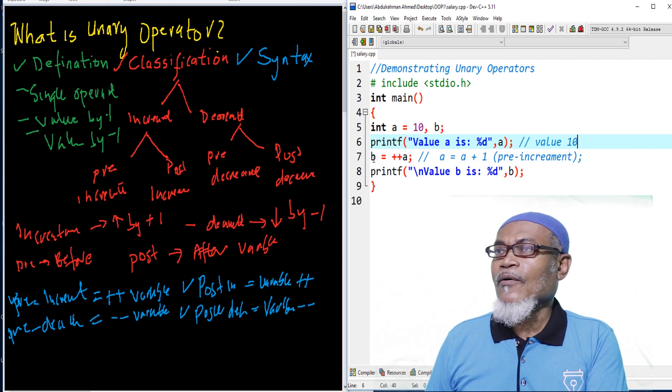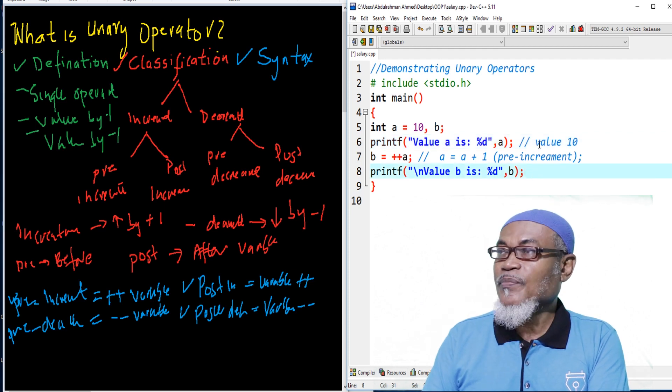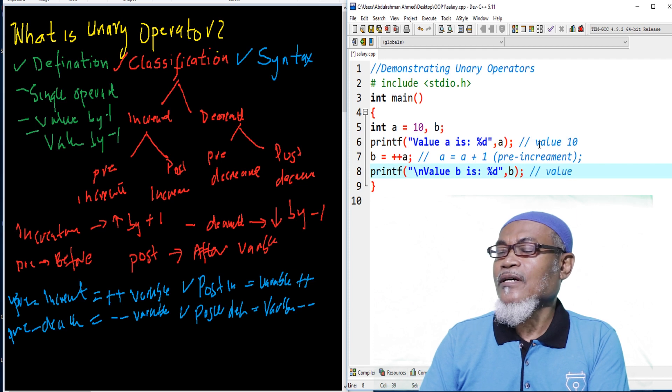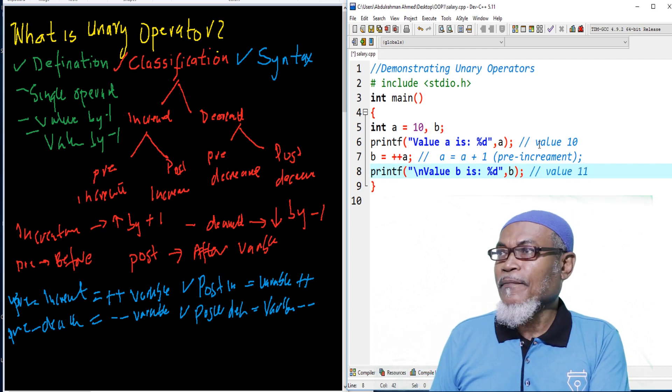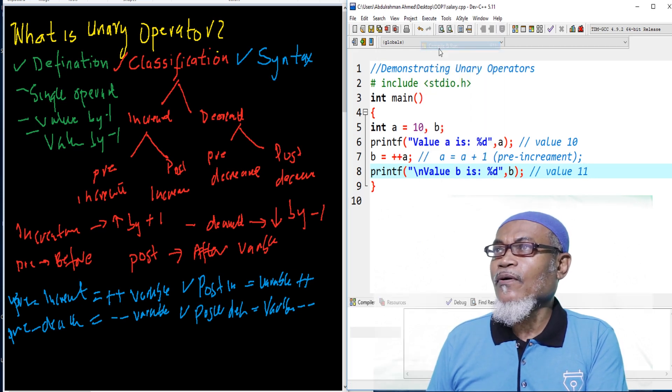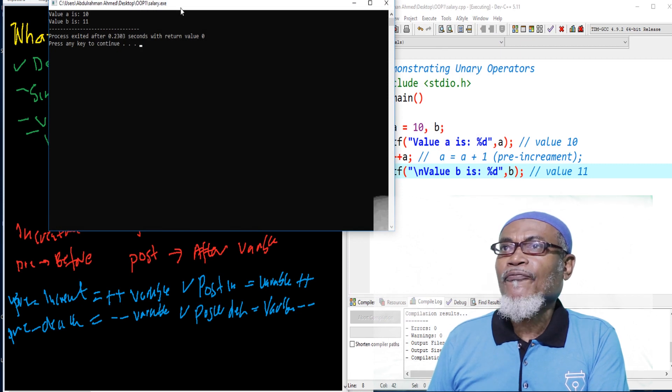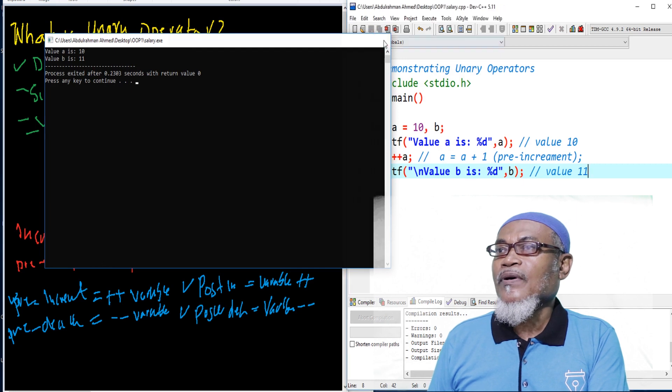And then, now, we want to assign our variable B. We are assigning variable B, whereby we are saying we have to increment A. A basically was 10. Now, we are incrementing it by 1. When we are saying plus plus A, we are doing pre-incrementing. And actually, it means A is equal to A plus 1. So, this is the meaning when we are writing B is equal to plus plus A, it means B equals A plus 1. After incrementing, we have to find out the value that has been incremented by 1. So, 10 by 1, here, the value will give us 11. So, when we execute this particular program, yes, it gives the value of A before it is incremented to be 10. After it is incremented, it becomes 11.